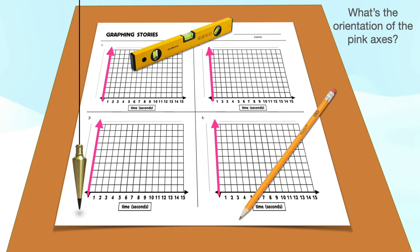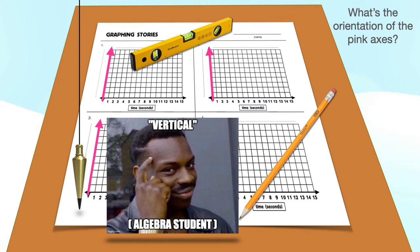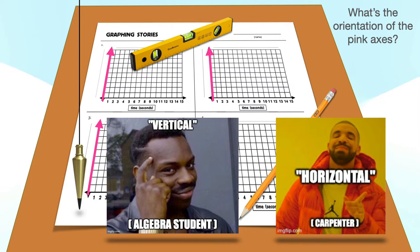So let's revisit the question about the orientation of the pink axes. An algebra student will say vertical, because they represent the vertical or y-axis. But a carpenter will say the piece of paper and any line written on it is horizontal, matching the orientation of the desktop.